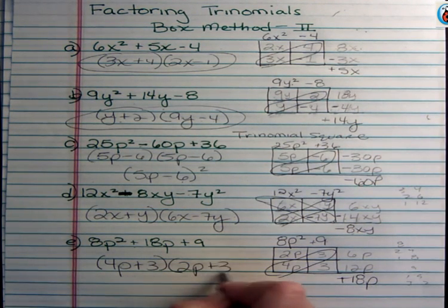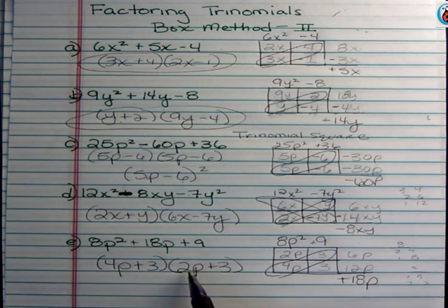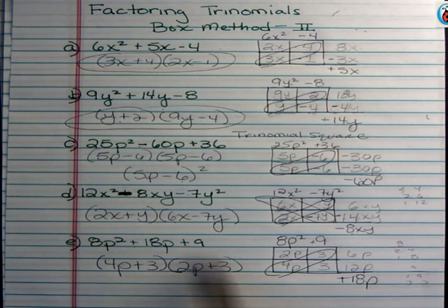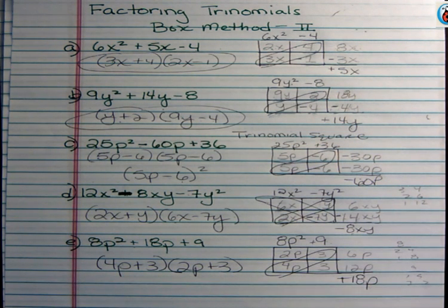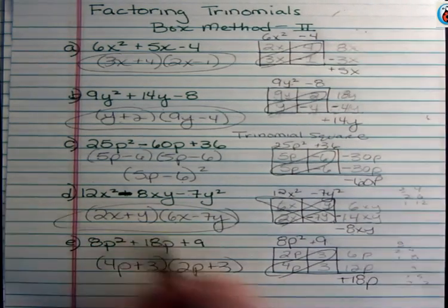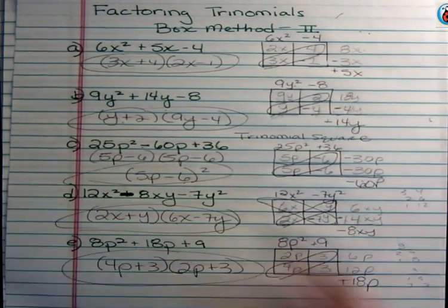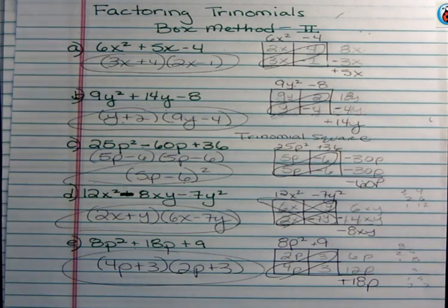2p plus 3. Quick check here, I have 8p². I have 6p and 12p and positive 9. 6 and 12 is 18, so I feel good about that. I didn't put my circle around these answers, but certainly we could. And that is the box method. Have a fantastic day. I'll talk to you next time.